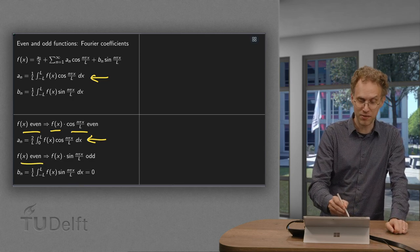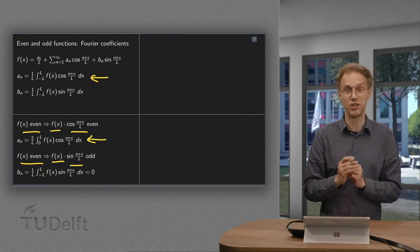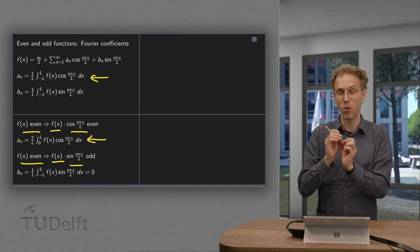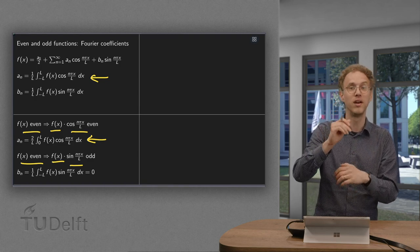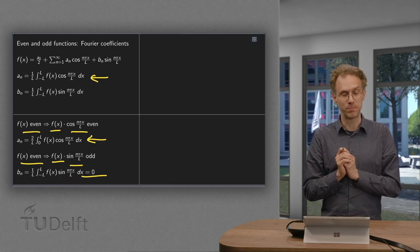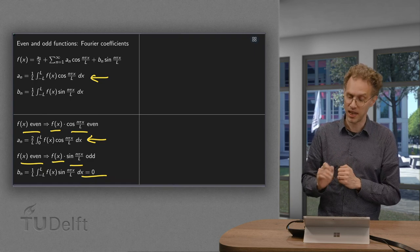However if f of x is even, a sine is odd, then f of x times the sine is odd. So now for the b_n we are integrating an odd function from minus l to l. So that's always 0. So for the even functions we only need to compute the a_n.